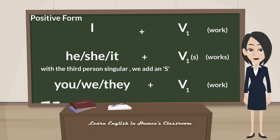The present tense is the base form of the verb. But with the third person singular — he, she, it — we add an 's'.